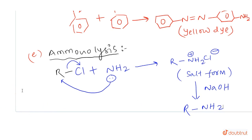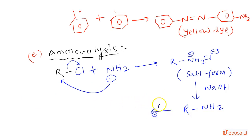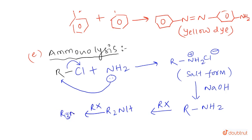This amine obtained can be used to form a quaternary ammonium salt. Reacting with alkyl halide RX converts RNH2 into R2NH, then again with RX it converts into R3N, and then with another RX it converts into the quaternary ammonium salt R4N+.